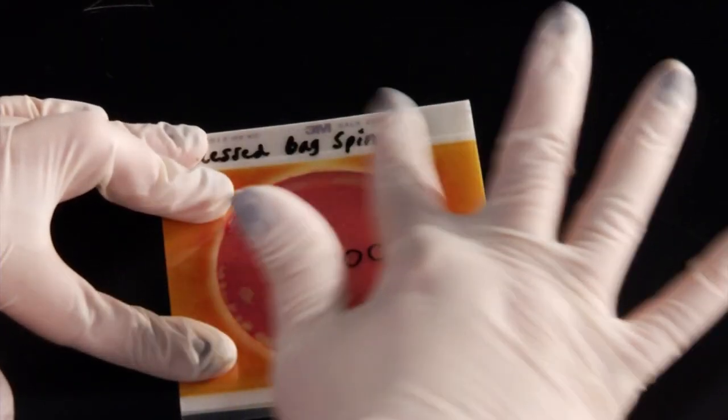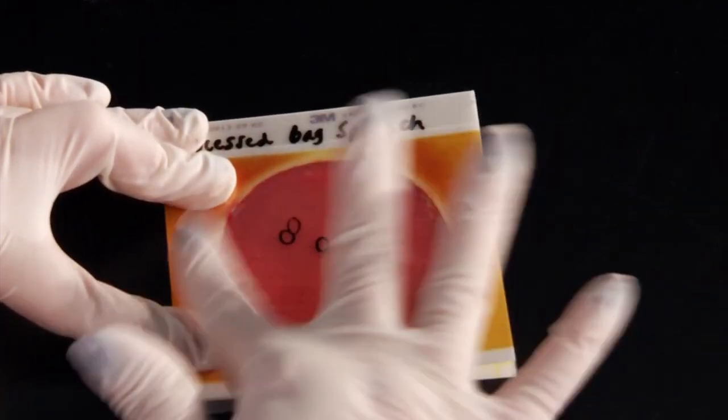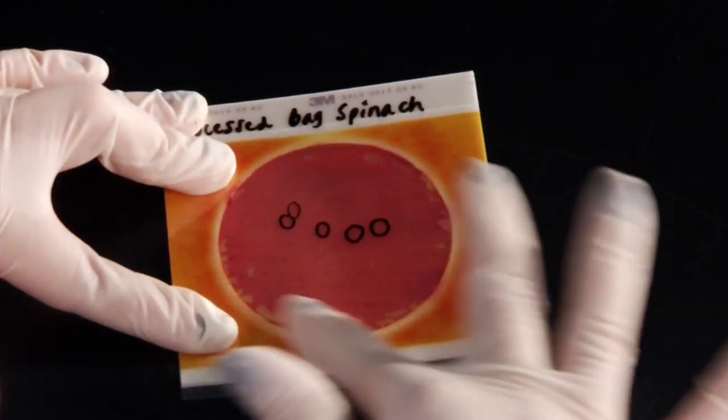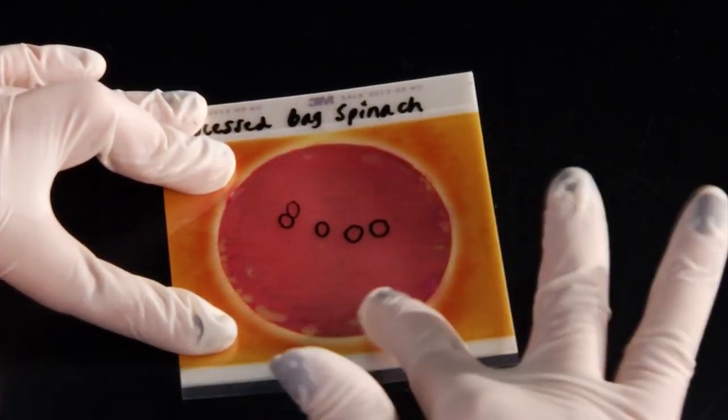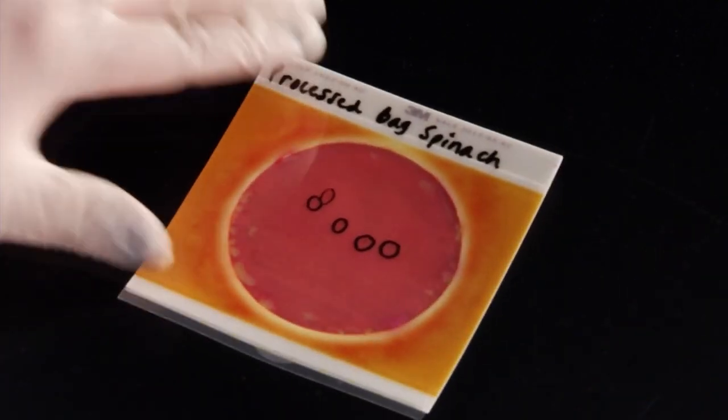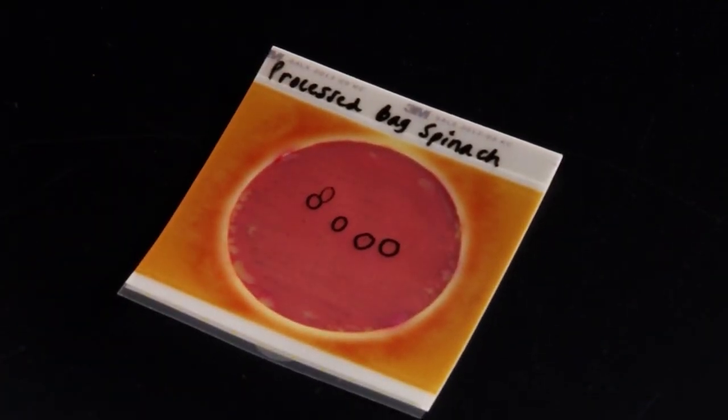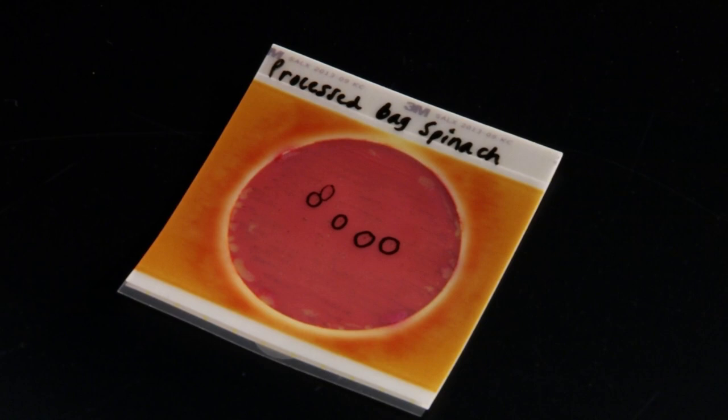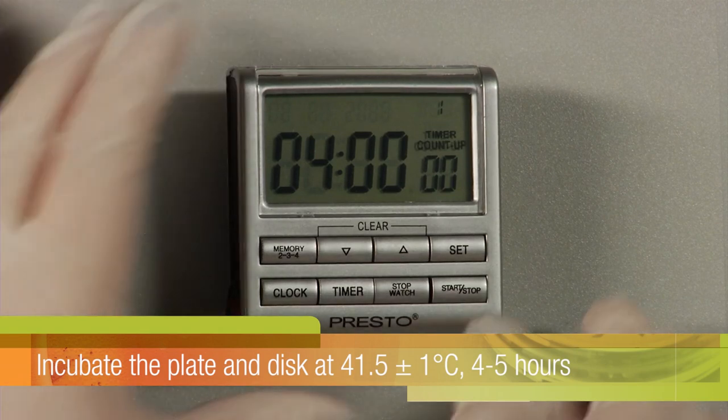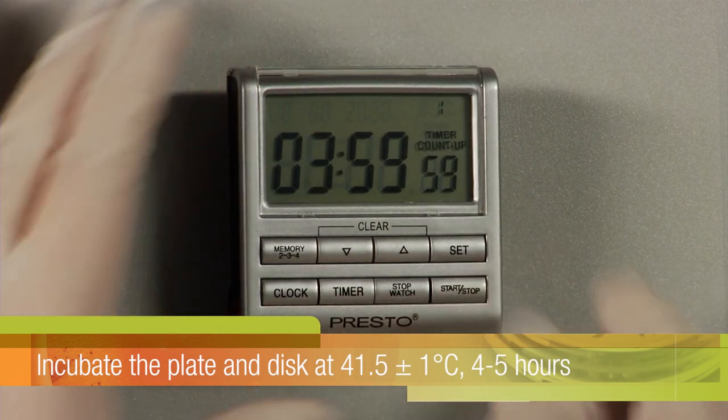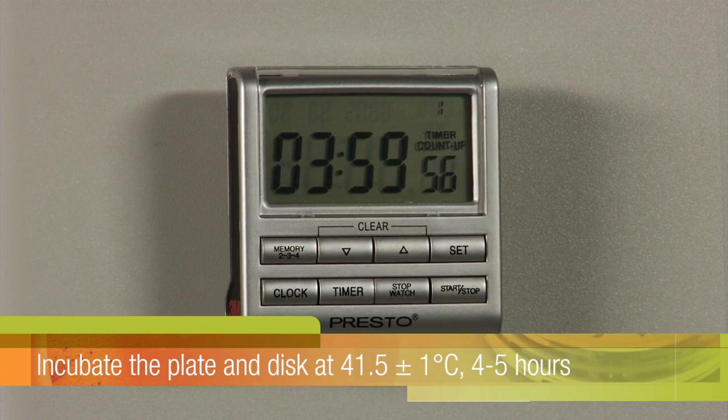Next, gently apply a sweeping motion with even pressure across the top film in order to remove any air bubbles in the inoculation area and assure good contact between the plate's gel surface and the 3M PetriFilm Salmonella Express Confirmation Disc. Incubate the plate and disc at 41.5 plus or minus 1 degree Celsius for 4 to 5 hours.